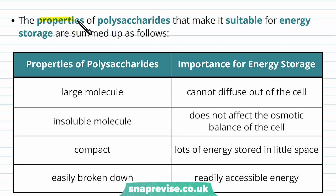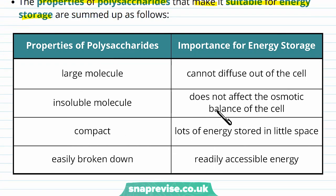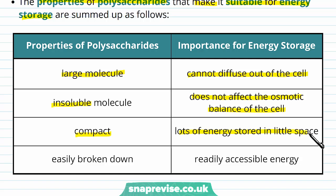This table summarizes the properties of polysaccharides making them suitable for an energy store — important points to learn. The property of being a very large molecule means it can't diffuse out of the cell, so we don't lose it. Being insoluble means it doesn't affect the osmotic balance of the cell. Being compact means lots of energy can be stored in little space. And being easily broken down by hydrolysis means it's readily accessible whenever energy demand arises.